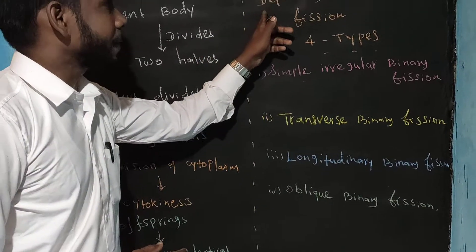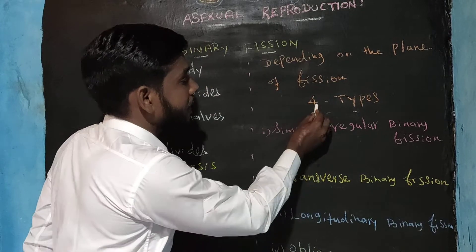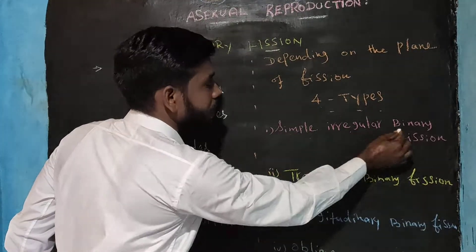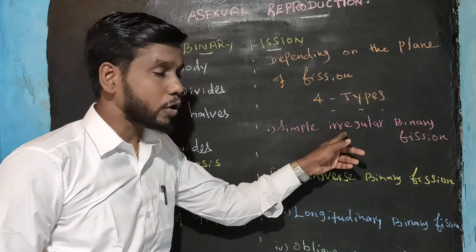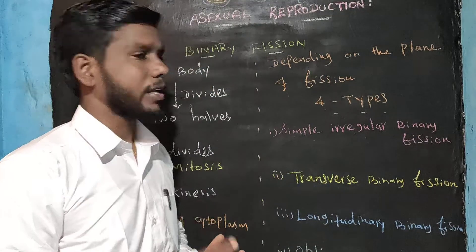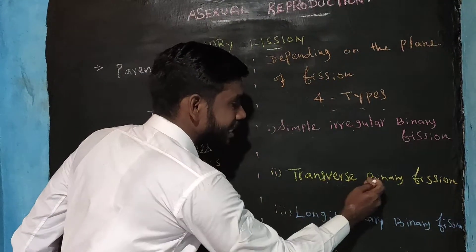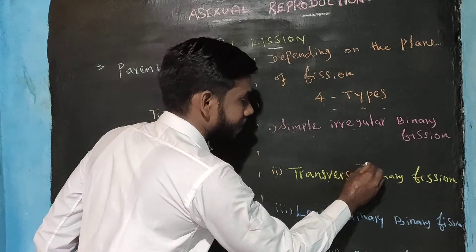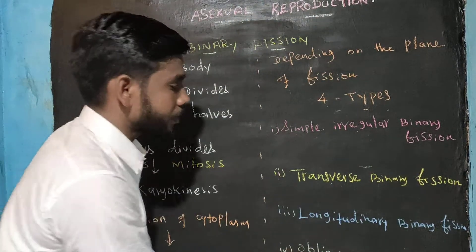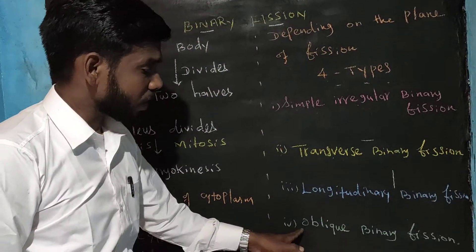Now let's talk about the types of binary fission, depending on the plane of fission. The first type is simple irregular binary fission. Another type is transverse binary fission. The next one is oblique binary fission.